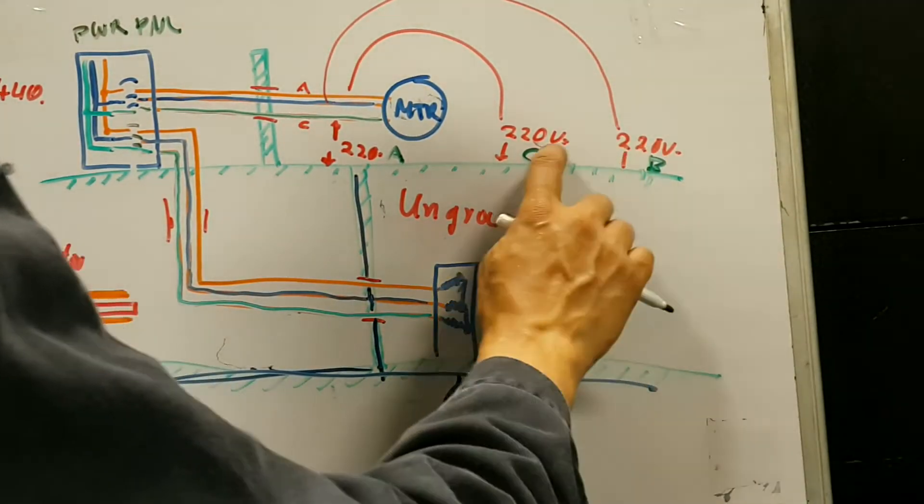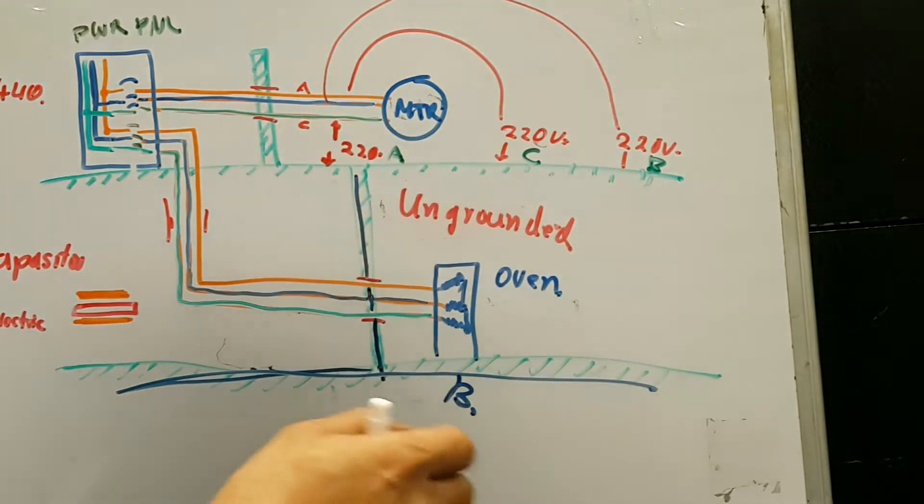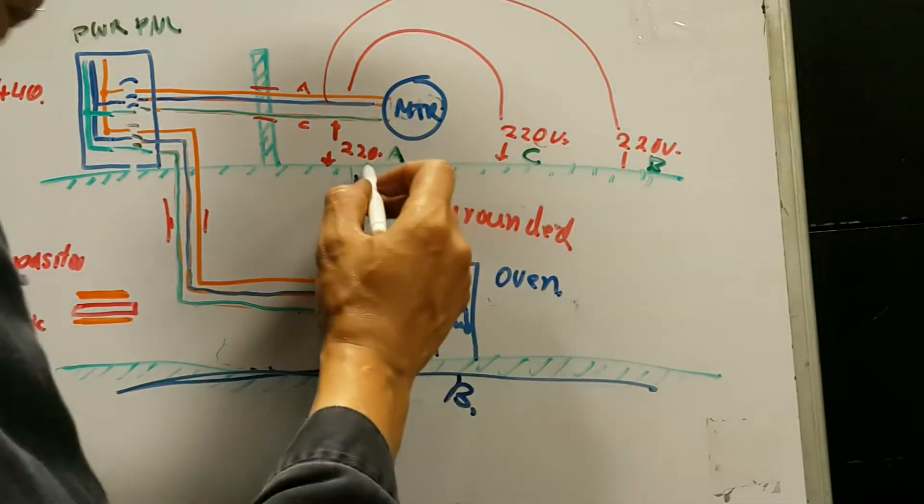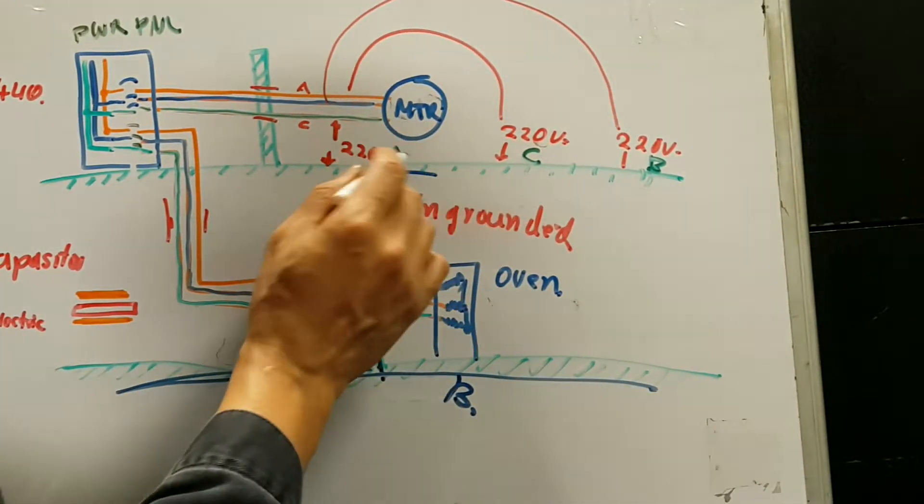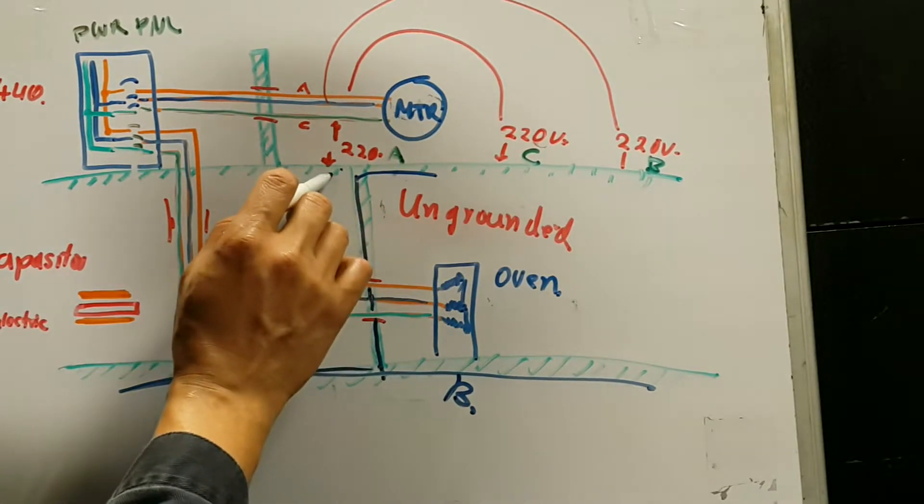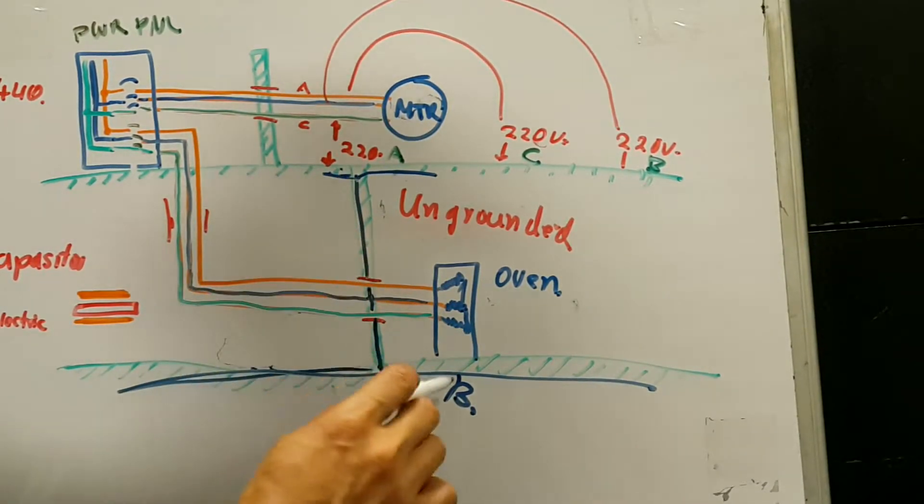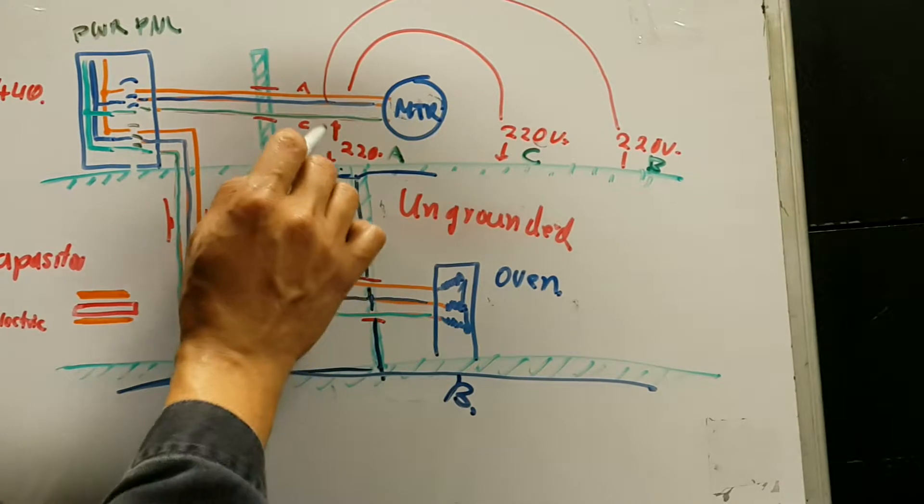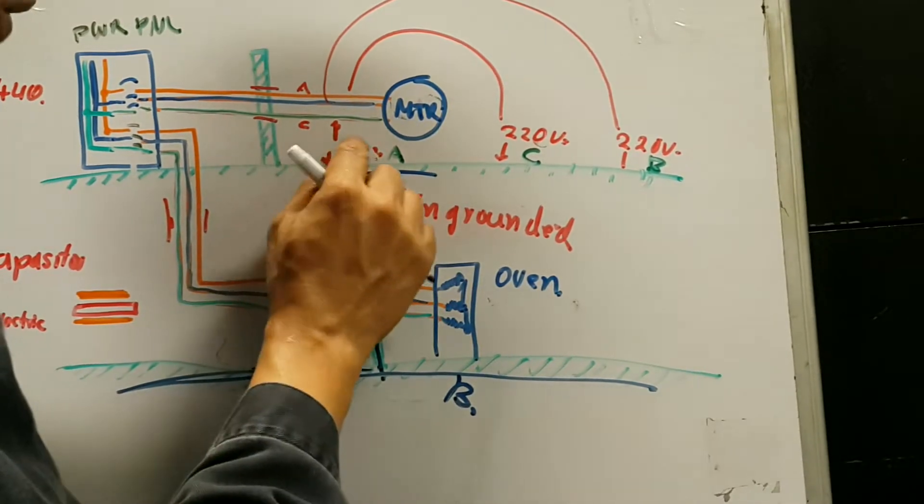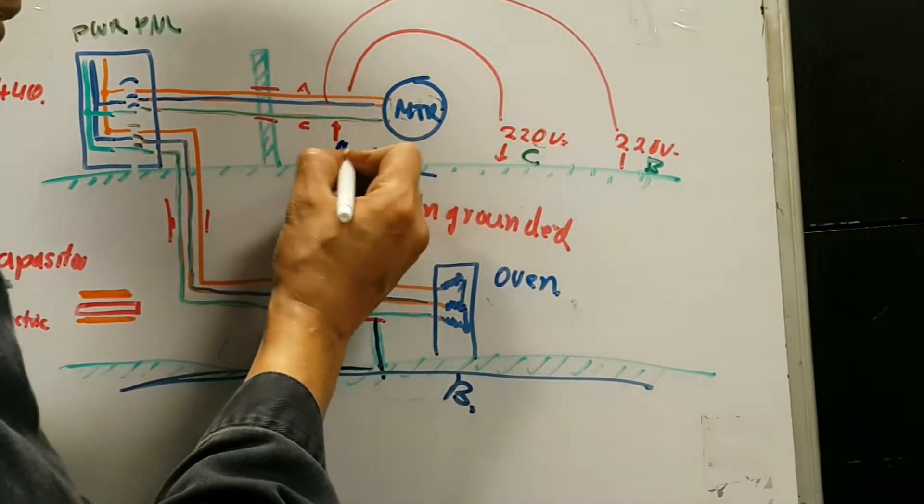Since the ship is at Bravo potential, what's the difference between, I'm sorry, B, which the ship is at B potential, and C? This will change to 440 volts.